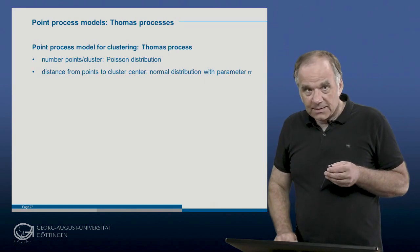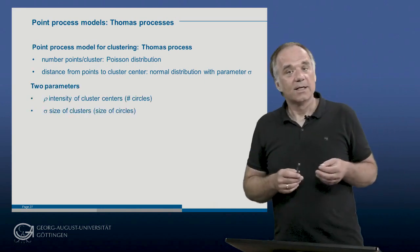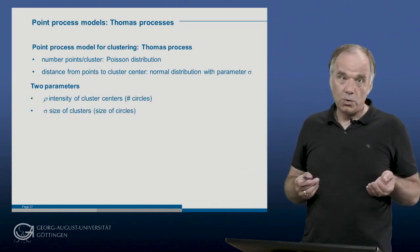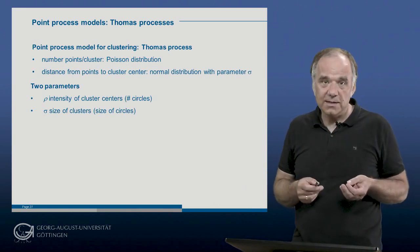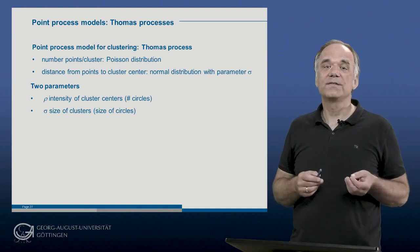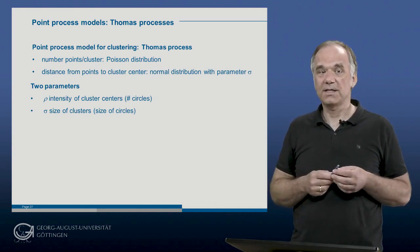So the simple Thomas process has two parameters: rho, the intensity of the cluster centers, and sigma, the standard deviation of the normal distribution, which gives the dispersion of the points of the cluster.